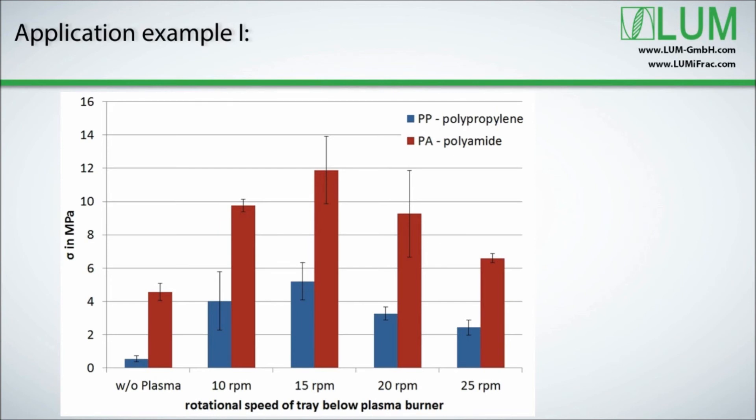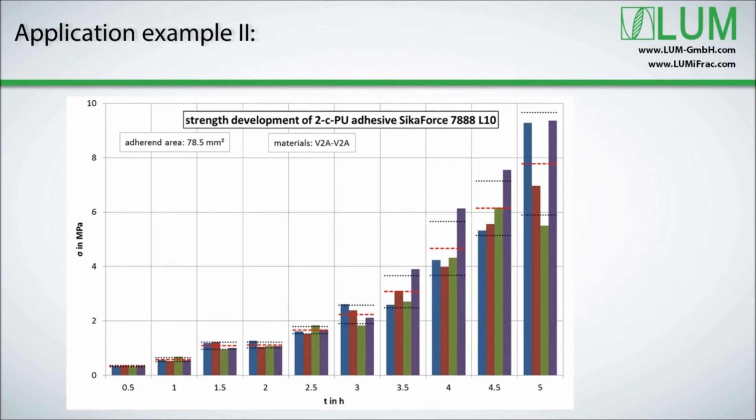Users who would like to find out more about the further processing possibilities of their products manufactured by adhesive bonding may have a look at the next example. The curing behavior of a two-component polyurethane adhesive is discussed with regard to strength. At the beginning, 40 test specimens were prepared simultaneously. Both adherents consist of stainless steel. With an interval of 30 minutes, four specimens were tested. The diagram shows the strength development over time of the adhesive.